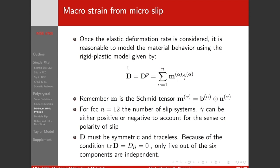If we take that approximation we can have this rigid-plastic model where our plastic velocity gradient is equal to our total velocity gradient — our deformation rate — and it's simply the sum over all of the slip rates on each of the slip systems in the grain times the Schmid tensor. For FCC, n is 12, so we go from alpha equals 1 to 12 and sum over all 12 slip systems. Our shear rate can be positive or negative to account for the sense or polarity of the slip.